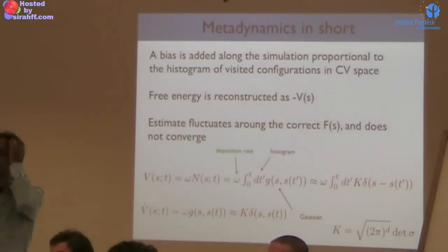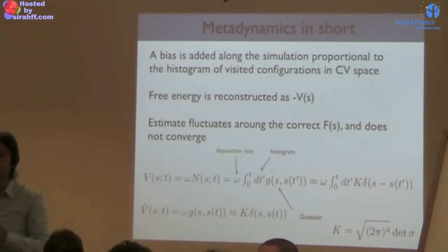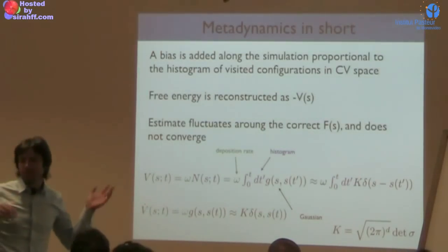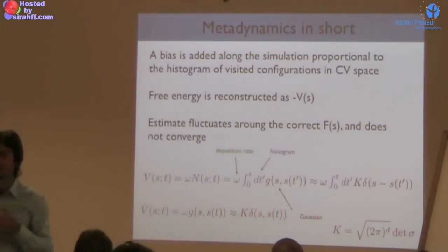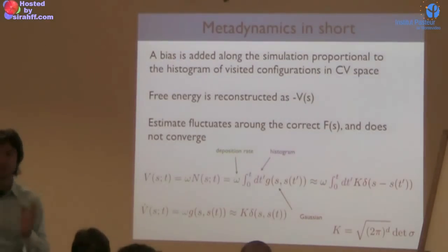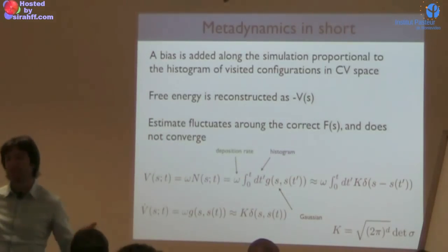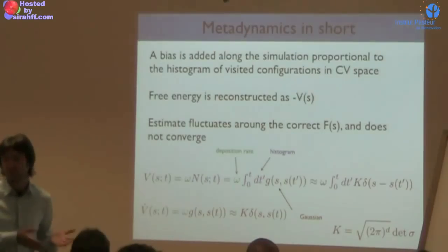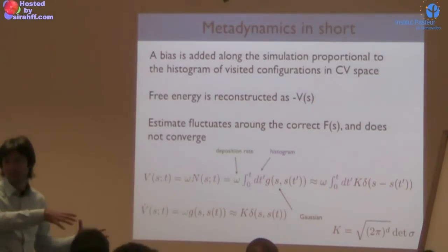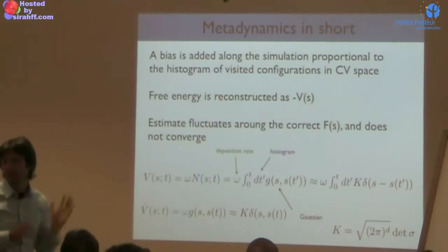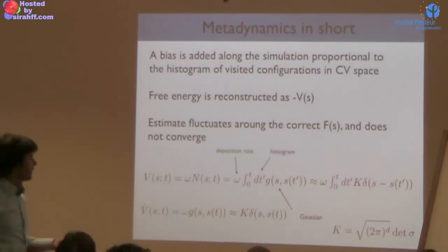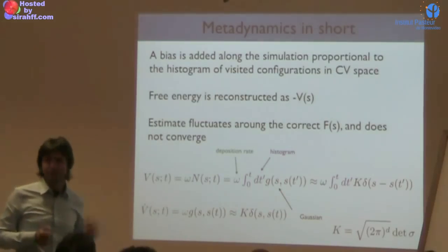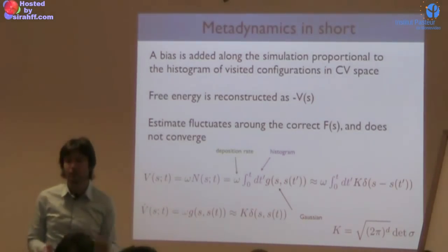Q: Do you accumulate every single configuration? A: In practice, you take every 500th or 1,000th configuration by specifying the tau parameter — the stride at which you accumulate. This should be small enough that the choice is irrelevant. What counts is just the rate. If you add Gaussians at every step, adding them becomes the computational bottleneck, which is wasteful — you want computing cycles for simulating the molecule. With tau equal to 500 or 1,000 steps, this cost is irrelevant, and the collective variable doesn't change much in 1,000 steps anyway.